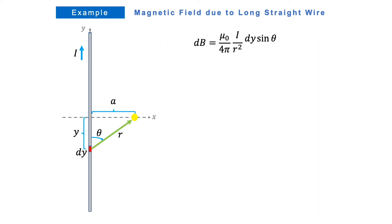Let's begin with r. In this figure, dy is y away from the origin. Hence, these three sides form a right triangle. Using Pythagorean theorem, r is equal to square root of y squared plus a squared, and we can plug this into our equation.